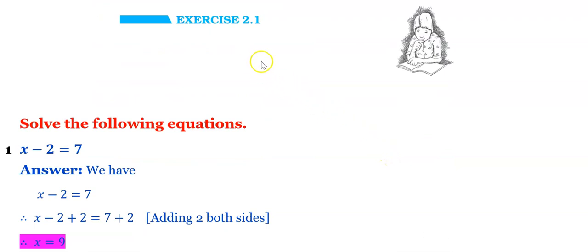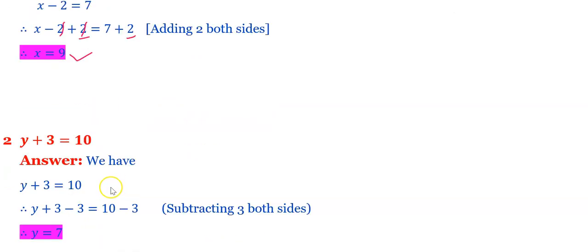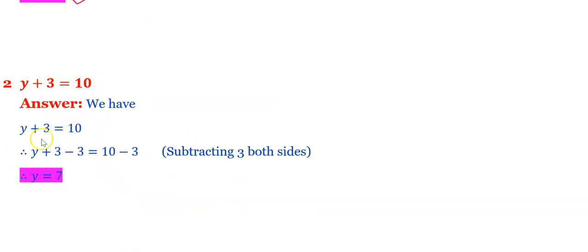Now we start Exercise 2.1: Solve the following equations. First: x minus 2 equals 7 — add 2 on both sides; plus 2 and minus 2 cancel, giving x equals 9. Second: y plus 3 equals 10 — subtract 3 from both sides; plus 3 and minus 3 cancel, giving y equals 7. These are the solutions.